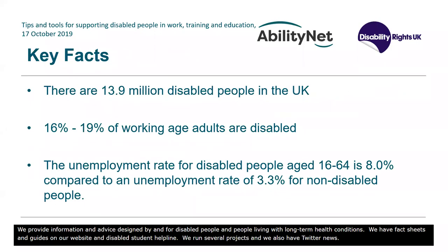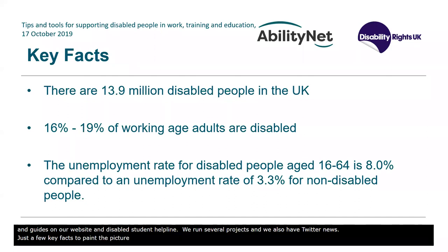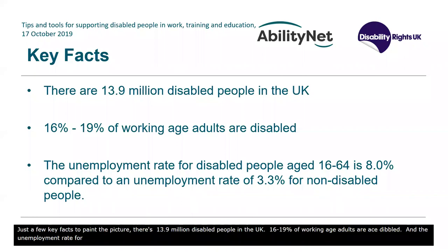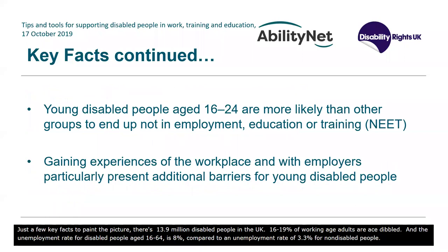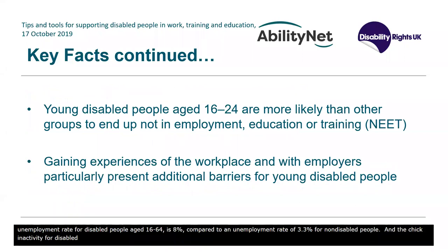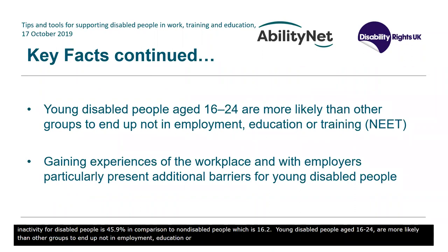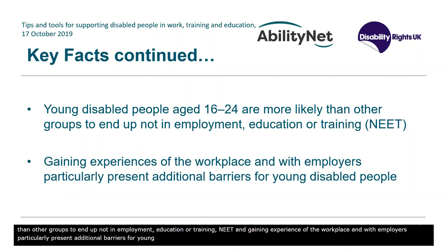Just a few key facts to paint the picture. There are 13.9 million disabled people in the UK, and 16 to 19% of working age adults are disabled. The unemployment rate for disabled people aged 16–64 is 8%, compared to 3.3% for non-disabled people. The economic inactivity rate for disabled people is 45.9%, compared to 16.2% for non-disabled people. Young disabled people aged 16 to 24 are more likely than other groups to end up not in employment, education or training, and gaining workplace experience presents additional barriers for them.